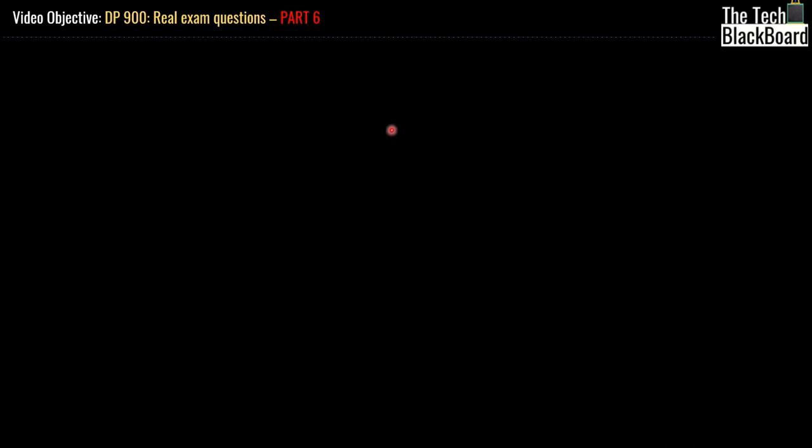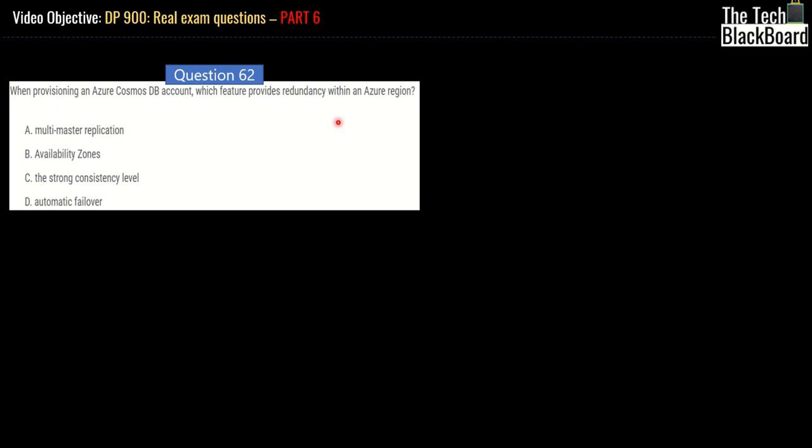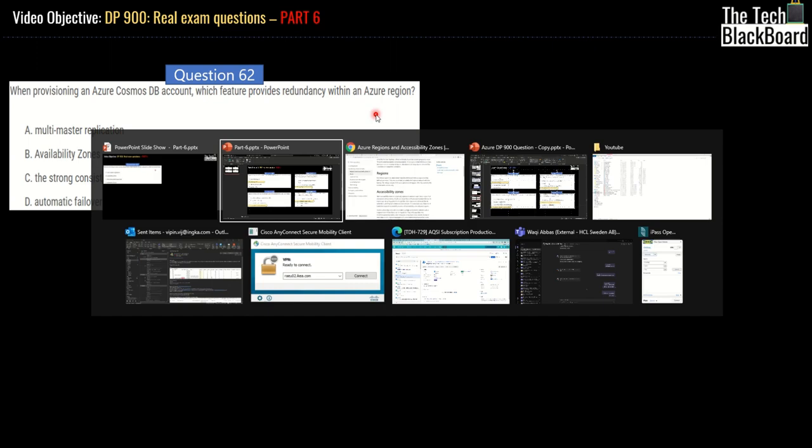So now let's start with our question number 62. The question number 62 says, when provisioning an Azure Cosmos DB, which feature provides redundancy within an Azure region? So the question is asking you to provide the option which actually gives redundancy under Azure region. So please understand the hierarchy very clearly that the redundancy being asked is under Azure region. I'm repeating this again and again so that you are paying attention on this one.